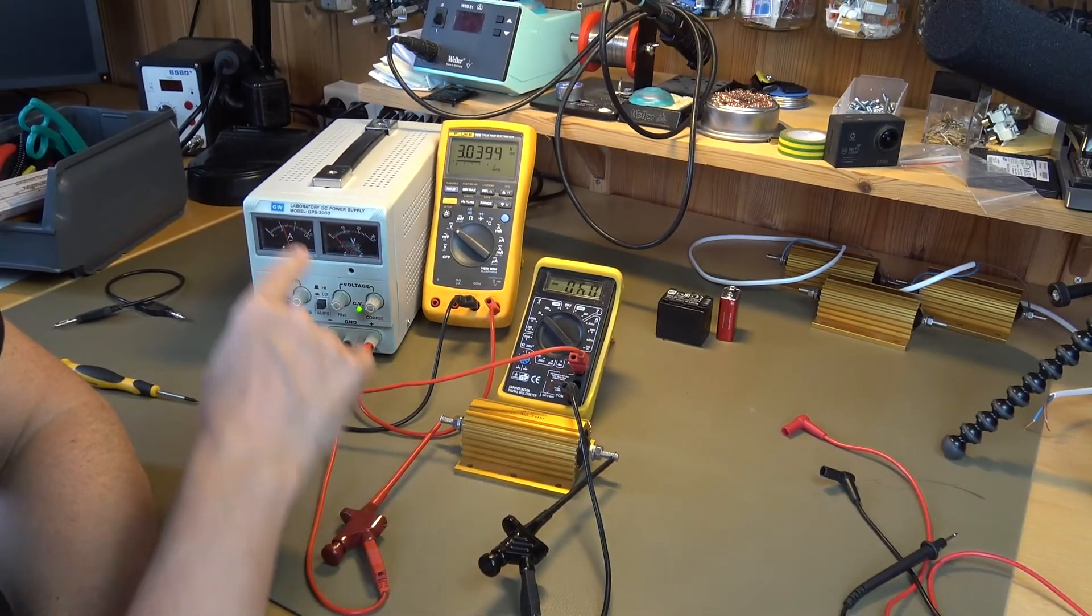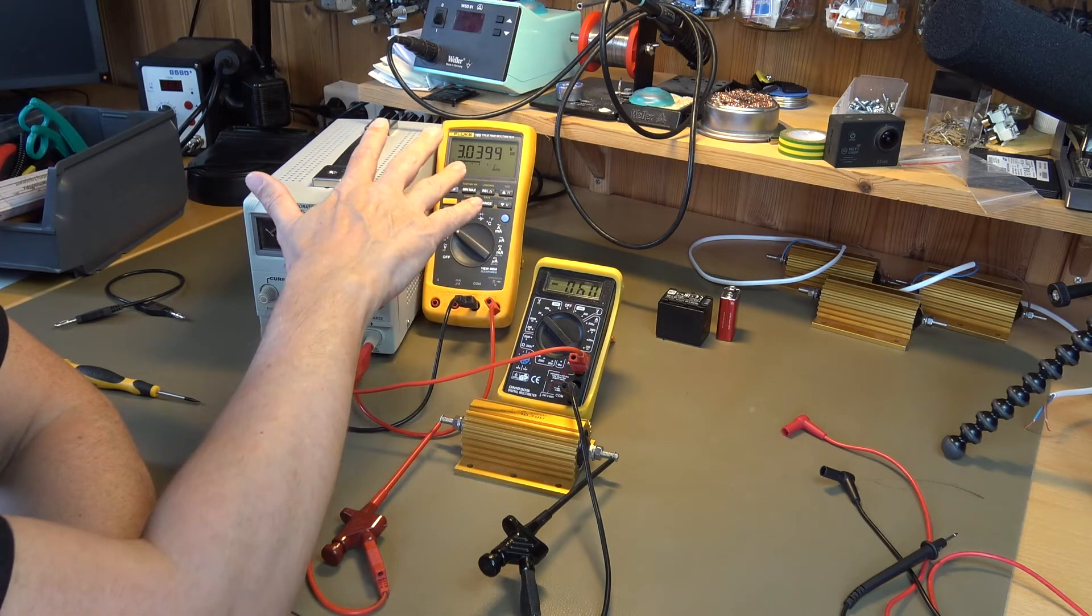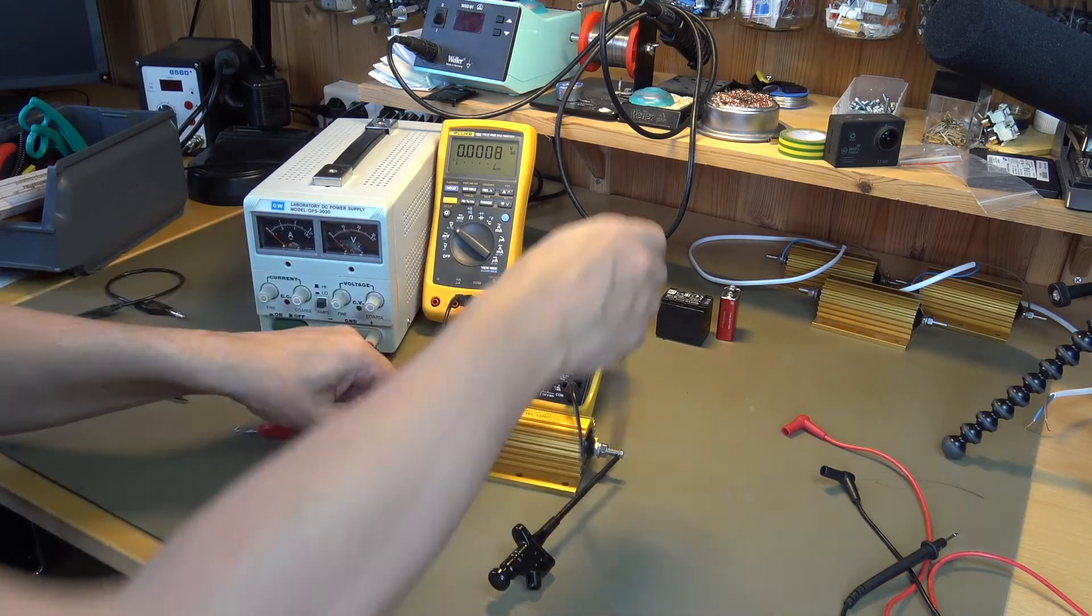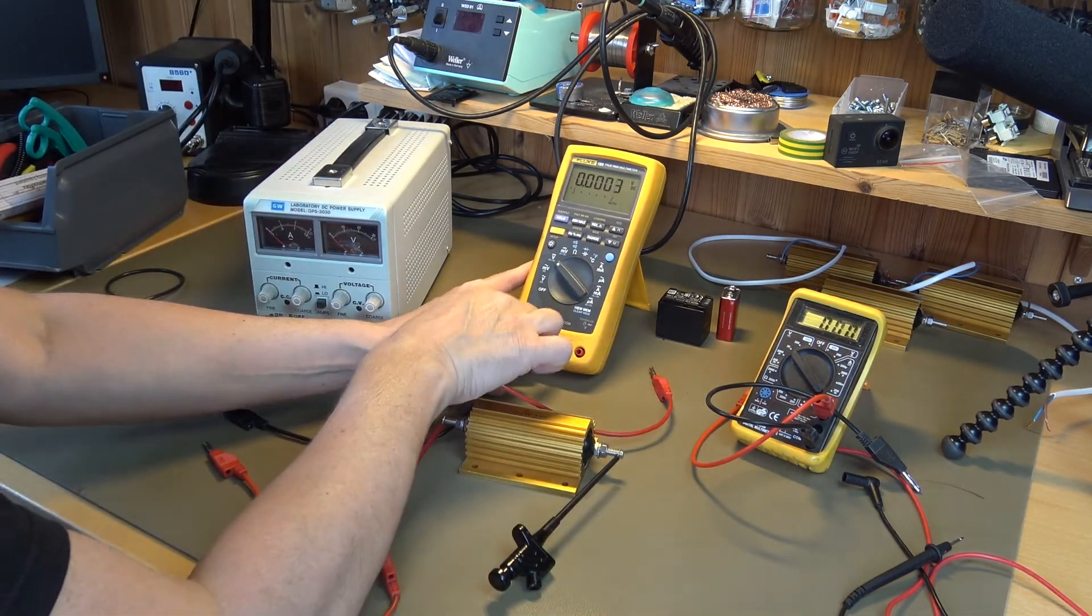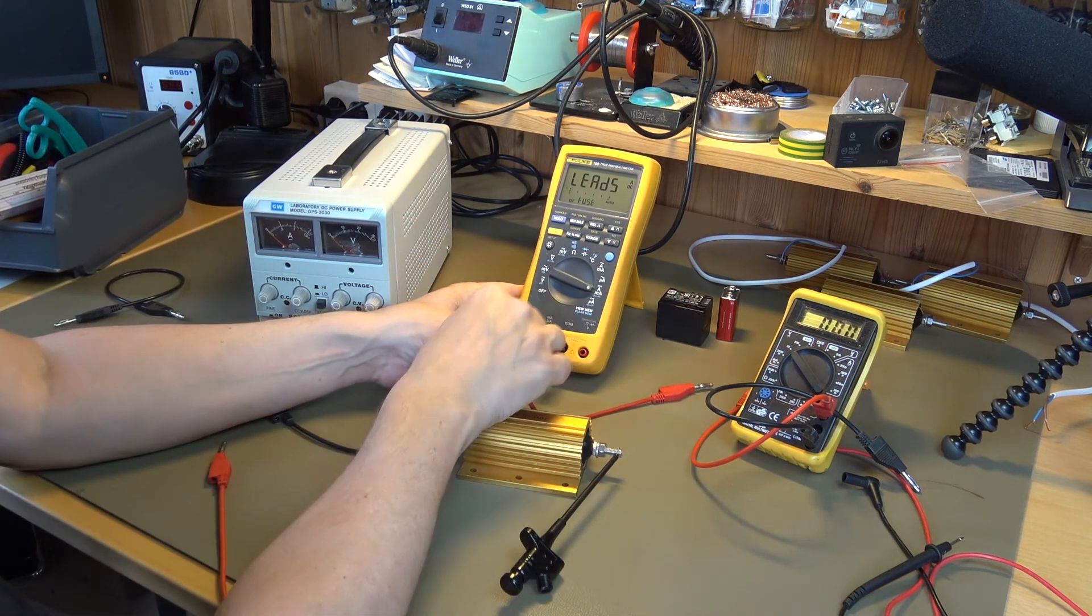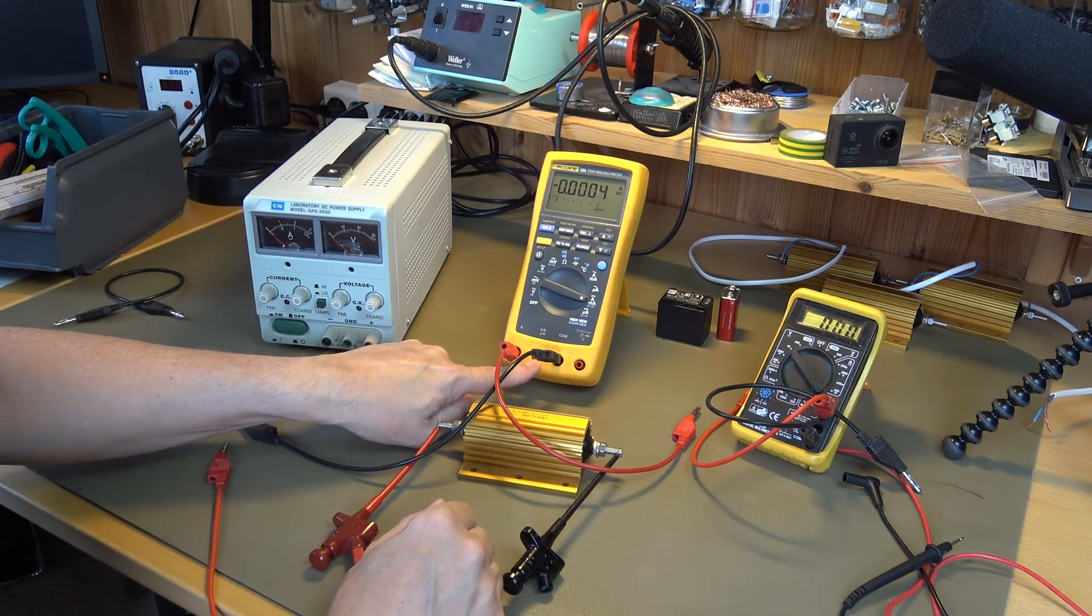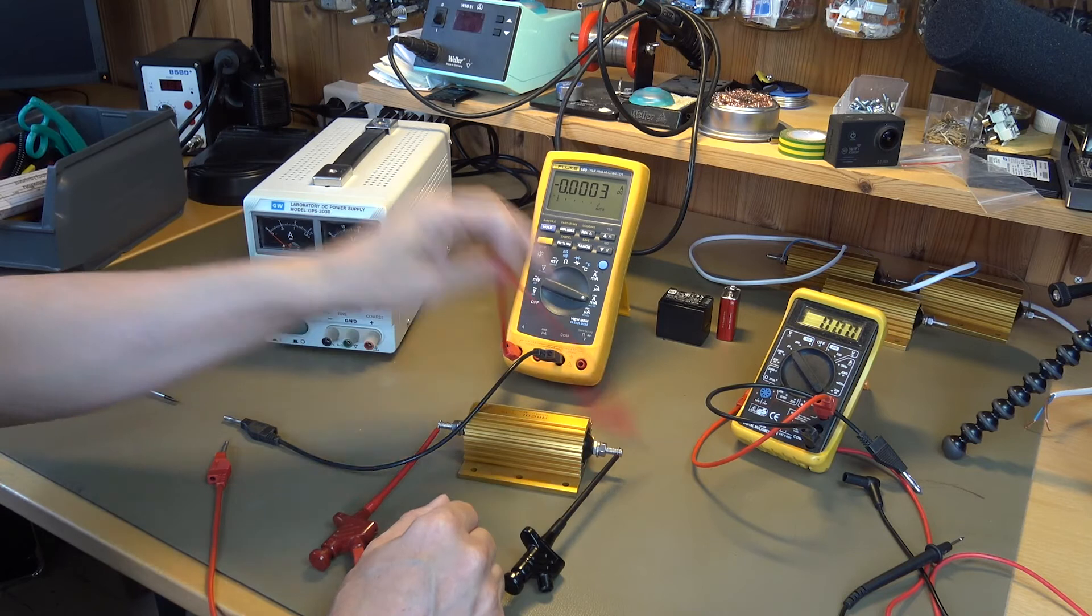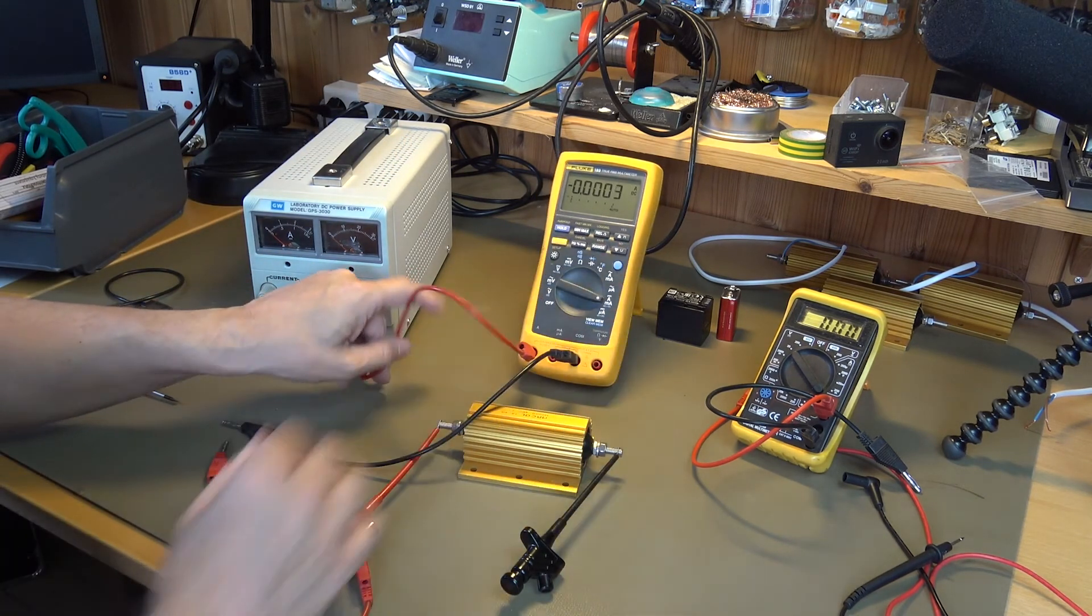It says minus 0.6, so 0.6 amps, which means 600 milliamps. That is the current which flows through this resistor. Shall we check? Let's check this one and see how accurate this is. I'm going to switch off everything and replace this one with that one.